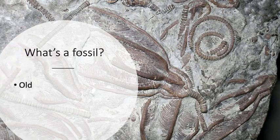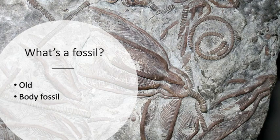There are two types of fossils. Body fossils include the preservation of hard or soft parts like bones, shells, or feathers, or the impressions of such features. Trace fossils are evidence of an organism's activity, such as burrowing, crawling, pooping, etc.